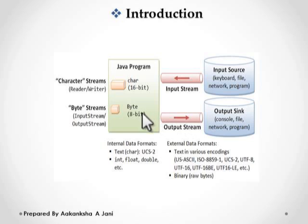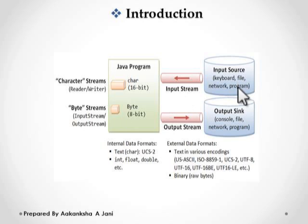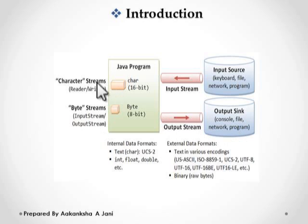What is a stream? A stream is an abstraction that either produces or consumes information. If you want to read some data from keyboard, file, or network, then an input stream can be used. And if you want to write some data to the console, file, or network program, then an output stream can be used. In Java, there are two types of streams: byte stream and character stream, and these two streams are available in the java.io package.